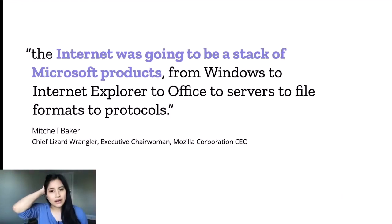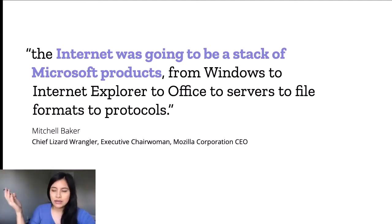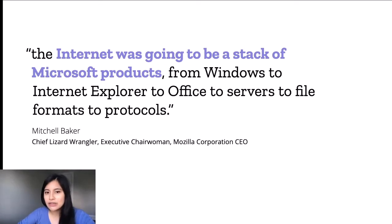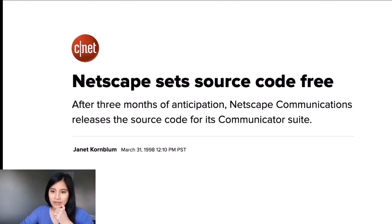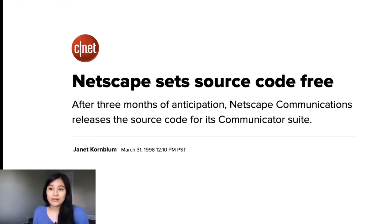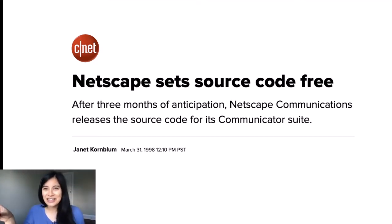Mitchell Baker, the founder and CEO of Mozilla, said the internet was going to be a stack of Microsoft products — from Windows to Internet Explorer, to Office, to servers, to file formats, to protocols. There was a real risk that Microsoft was going to move the web in its own direction away from the open building blocks we know as the open web. So Netscape did something pretty radical — they publicly released the code behind their browser for anyone to use, copy, remix, and share. This was actually the first time the term 'open source' was used, in reaction to this.